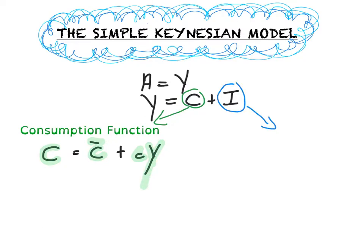Secondly, we are going to look at investment spending. For investment spending, we are going to have the following: I equals to Ī. This means that investment is a function of only autonomous investment.